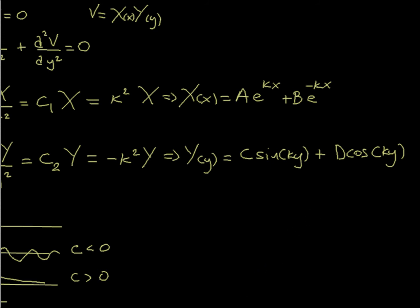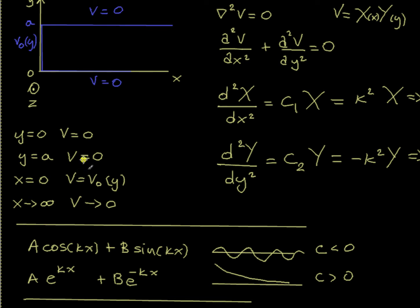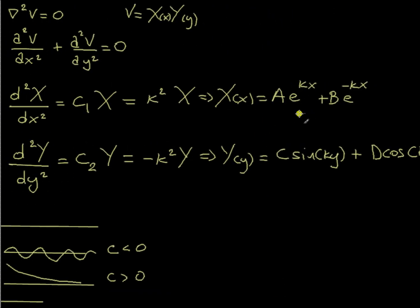Now that I have the two solutions for X and Y, I need to go back and start imposing the four boundary conditions. The easiest one to impose is: as x goes to infinity, the potential needs to approach zero. As x goes to infinity, e^(Kx) does not approach zero — it blows up and approaches infinity. There is no way to keep this term, so from this boundary condition, A must be zero.